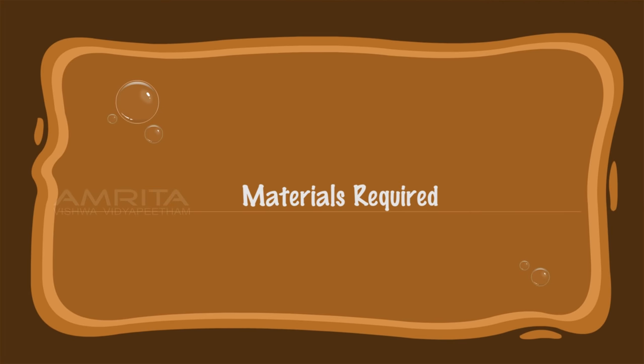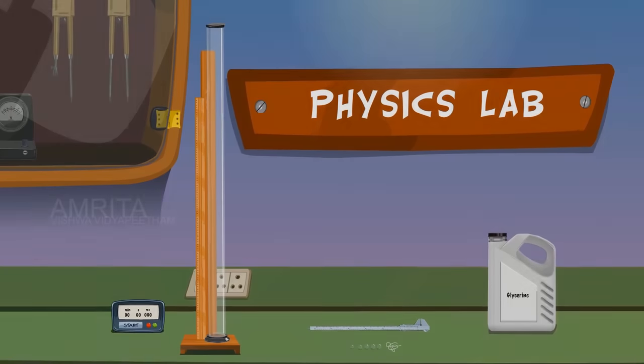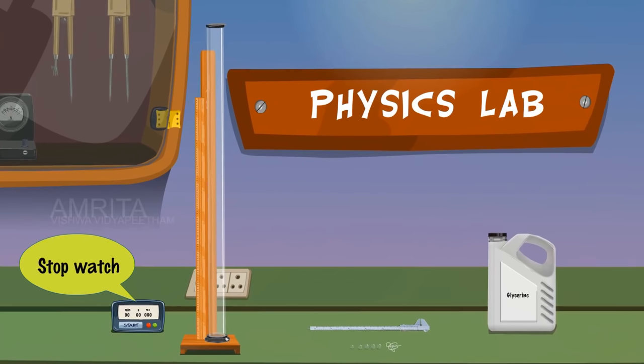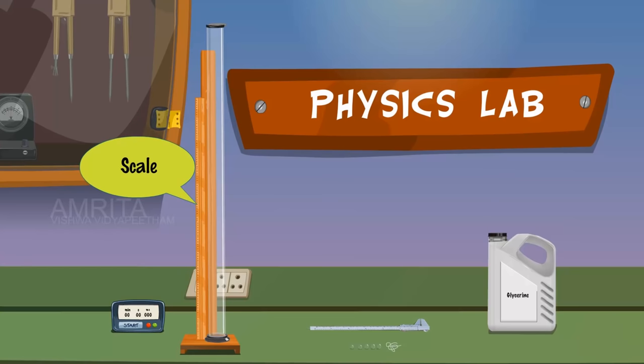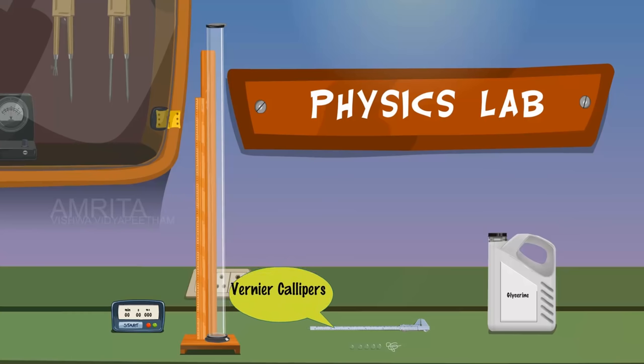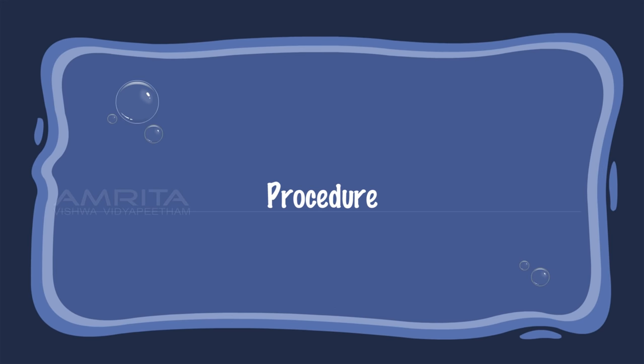Viscosity - Materials Required: Stopwatch, tall glass jar, scale, vernier calipers, glass beads, thread, glycerine. Procedure: